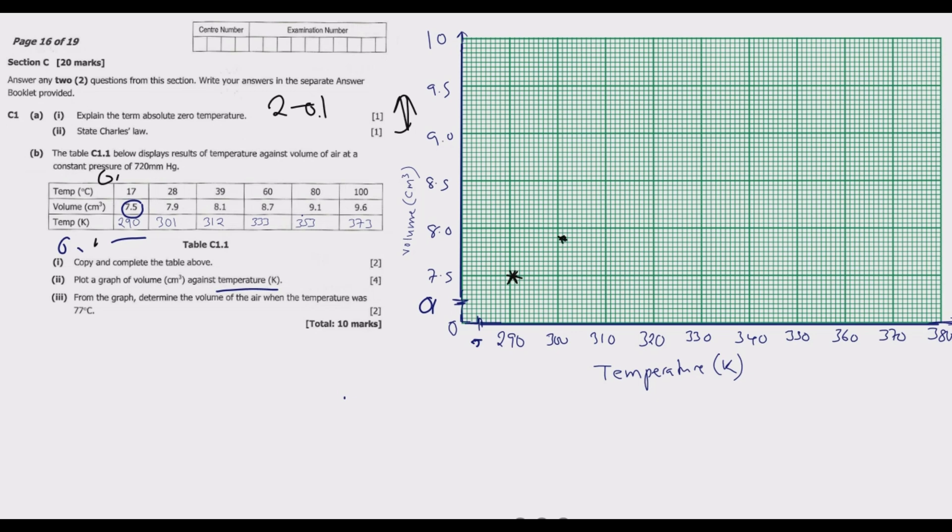Next is 312, 8.1. 312 is just two points above 310, then 8.1. So 8.1 will be somewhere here. Then we have 333, 8.7. So 333, 1, 2, 3, it will be along this line. 8.7 will just be two points above. So 1, 2, it will be somewhere above there.